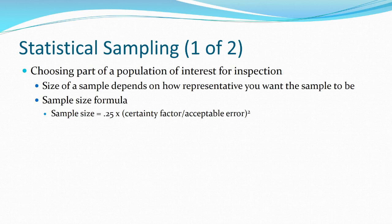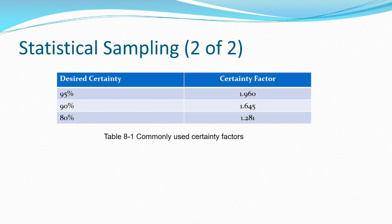Statistical sampling uses a smaller part of an overall population to hopefully give us some representation. It's often impossible to sample an entire population — if you're trying to determine users nationwide or statewide, you might want to use statistical sampling. For example, if we want a certainty of 95%, our certainty factor breaks down to a 1.9% error rate. That means we can have 95% certainty of no defects if we sample people at that level.